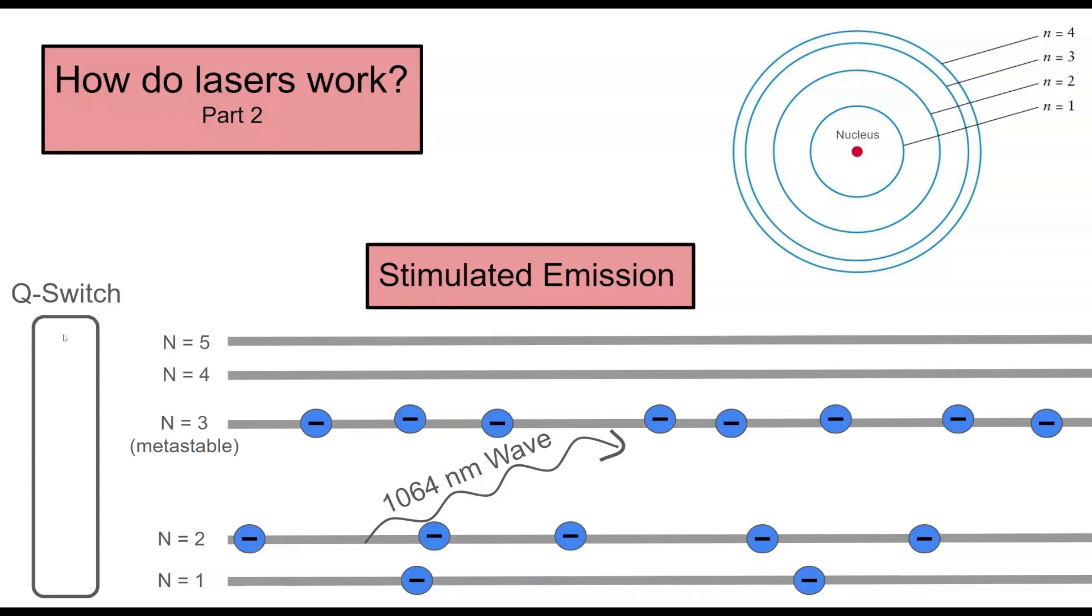That light might bounce around since we have mirrors on both sides. And when we let this Q-switch through, or open, which you'll see how we do it later on in the video, this Q-switch lets the light through. And it's very important that it's this 1064 nanometer wave.